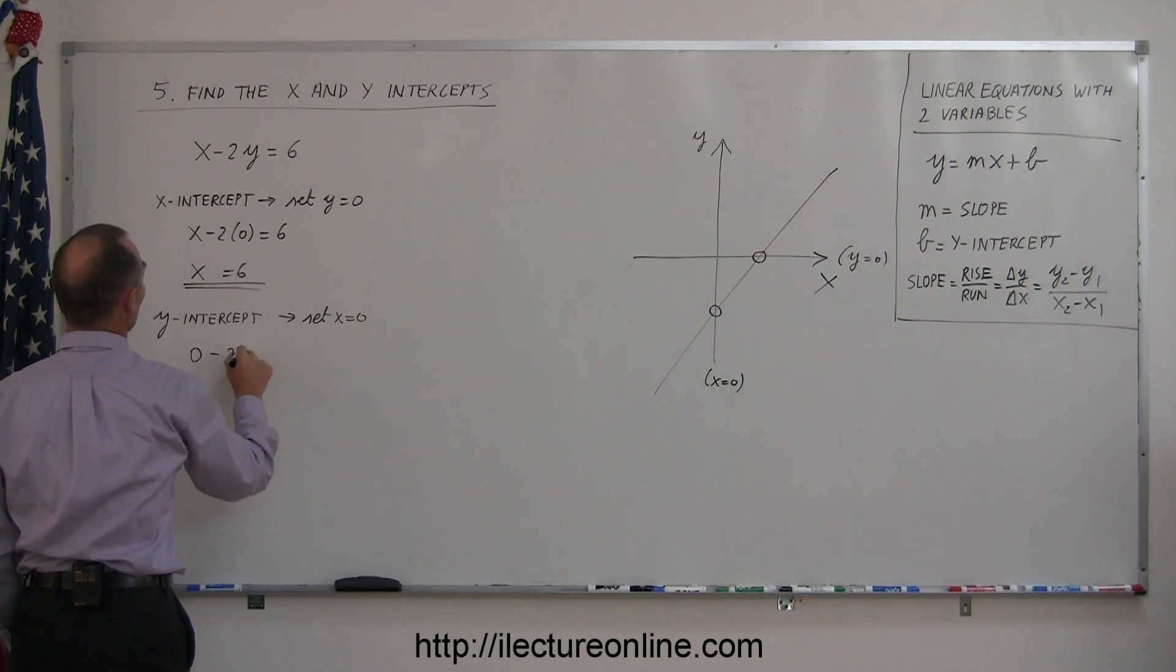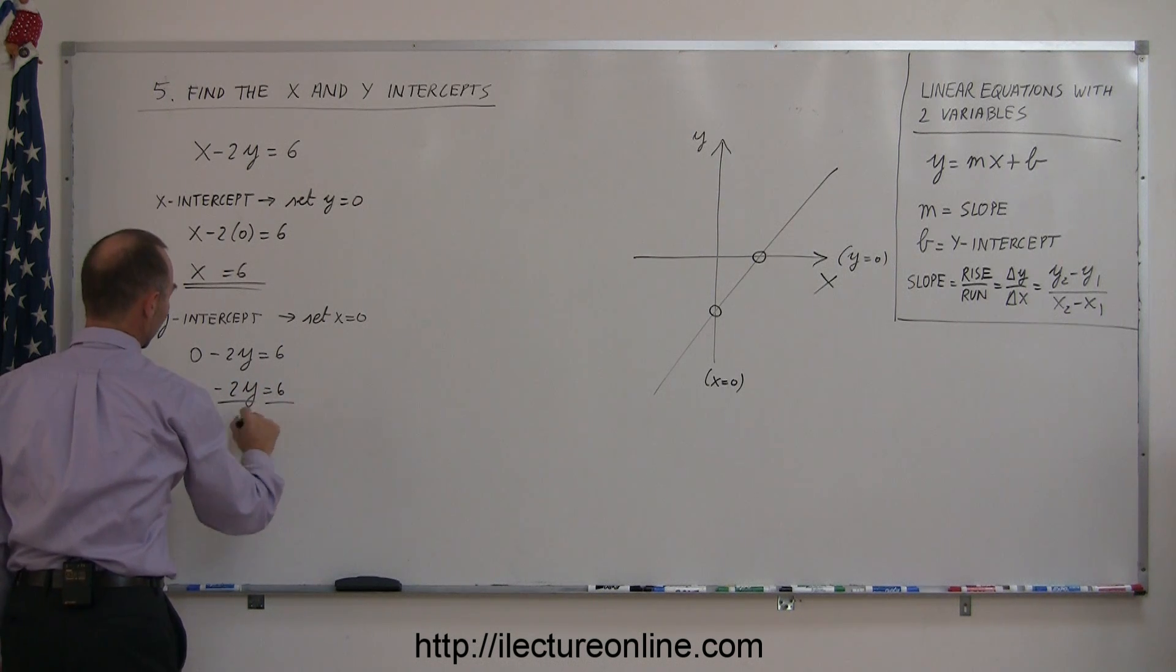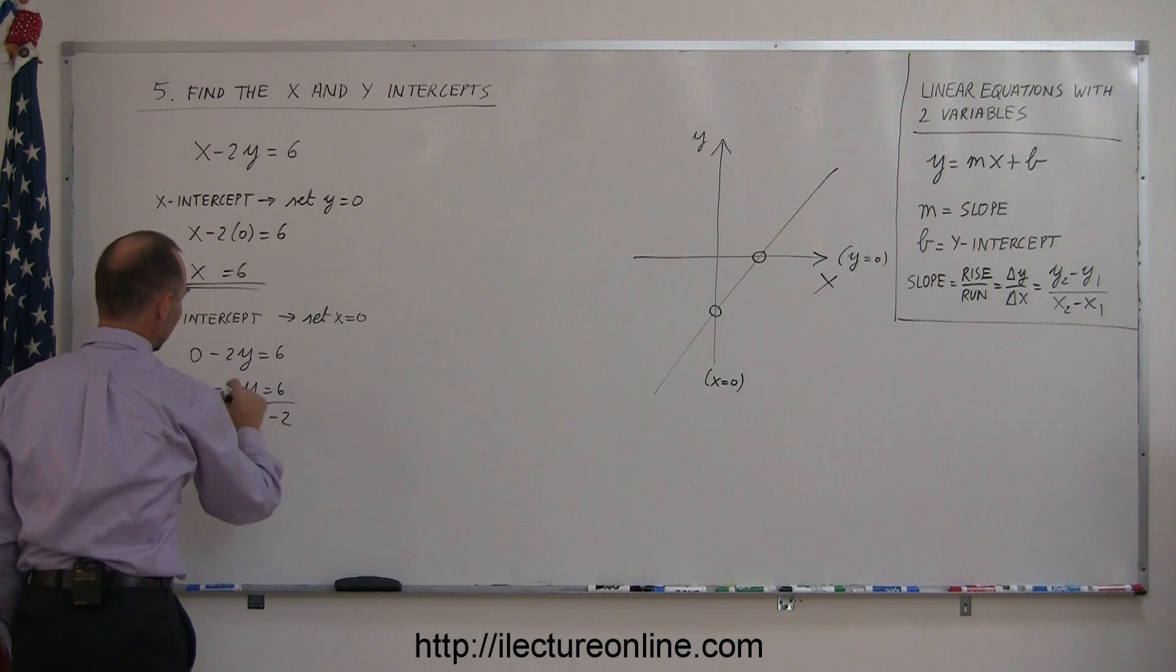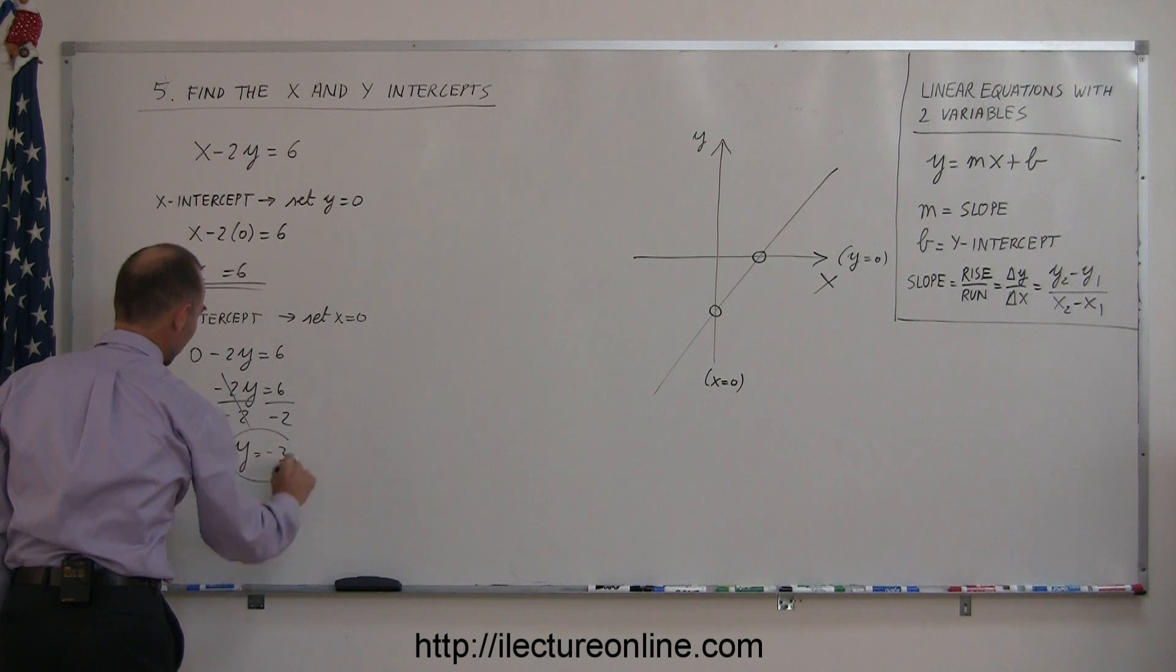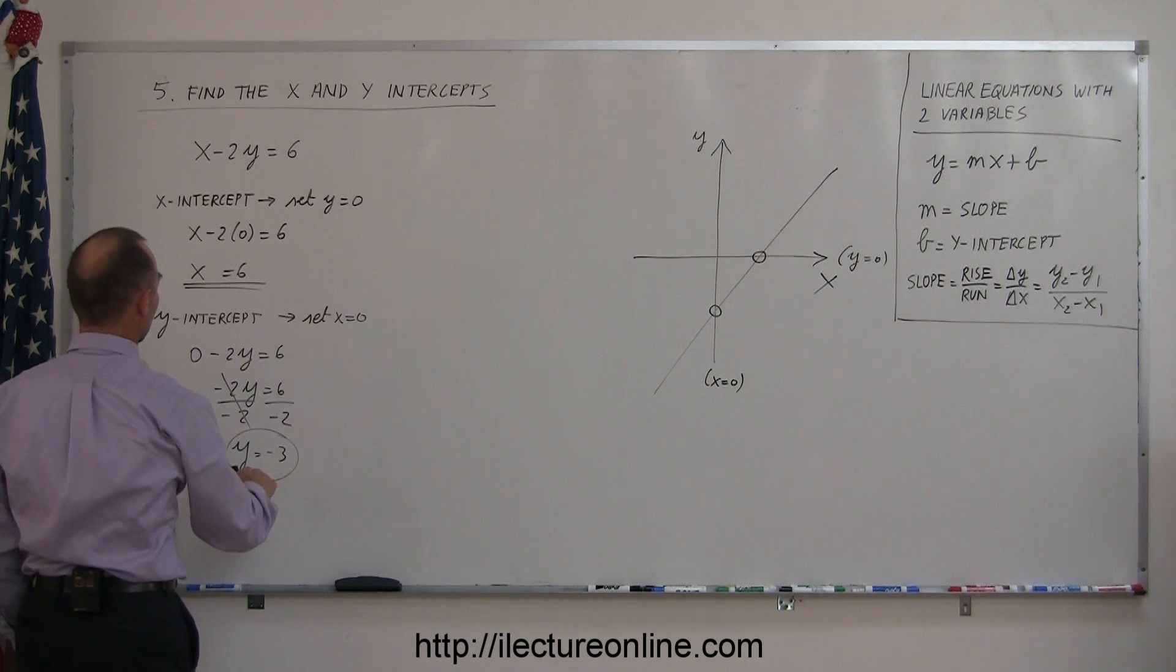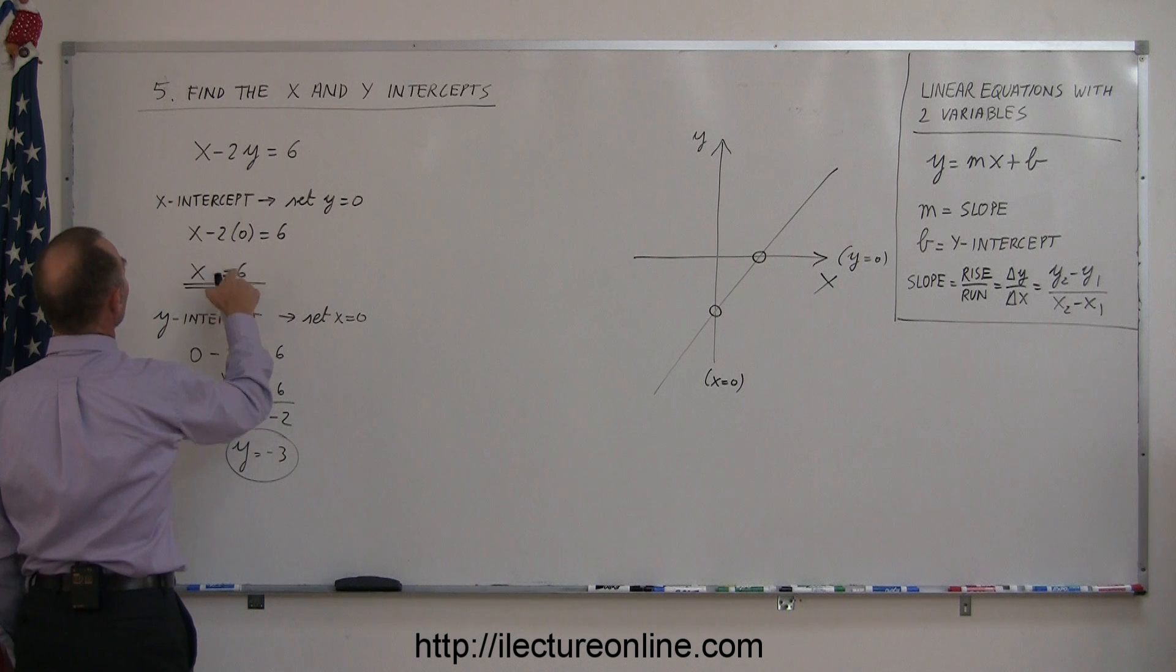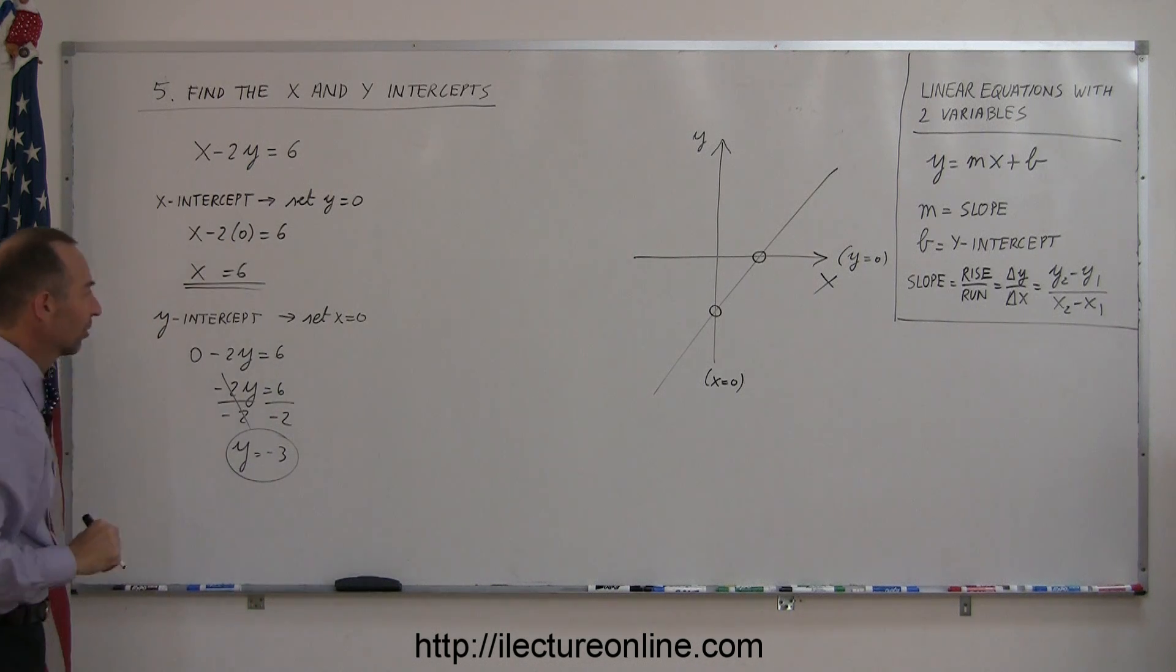Zero minus 2y equals 6, or minus 2y equals 6. Divide both sides of the equation by the numerical coefficient in front of y. We get y equals 6 divided by minus 2, which is minus 3. So, y equals minus 3 is the y-intercept. x equals 6 is the x-intercept.